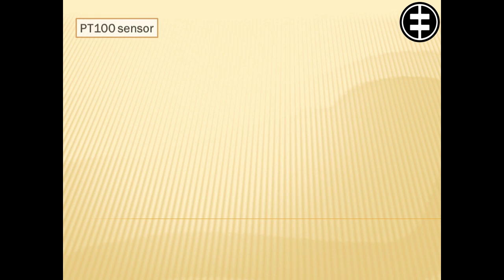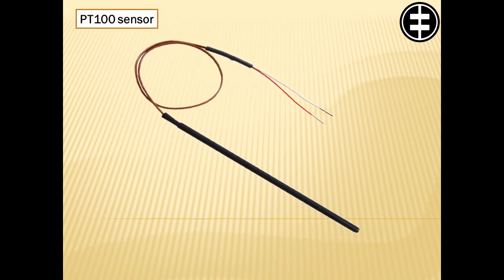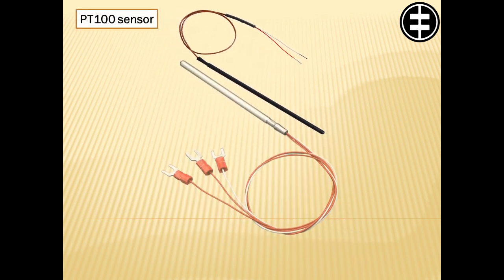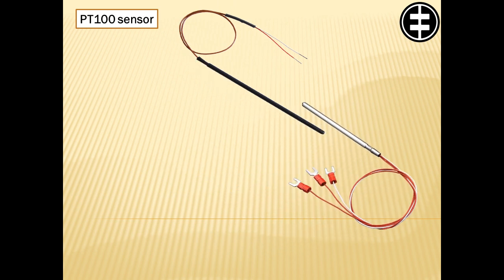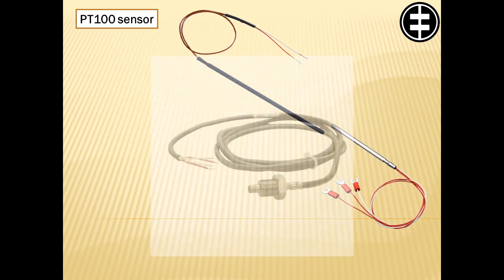For different measuring circuits the resistance element can be produced in different versions: 2, 3 or 4 wires connection. Most accurate is 4 wires.